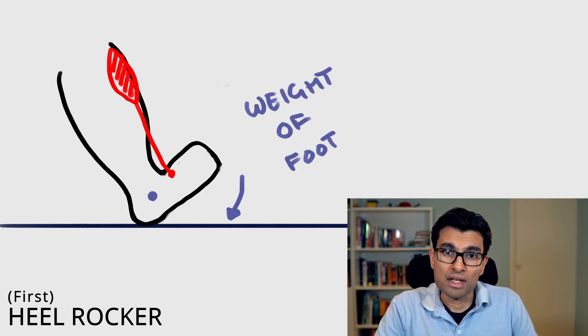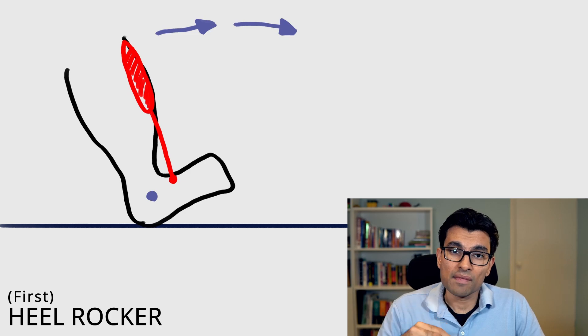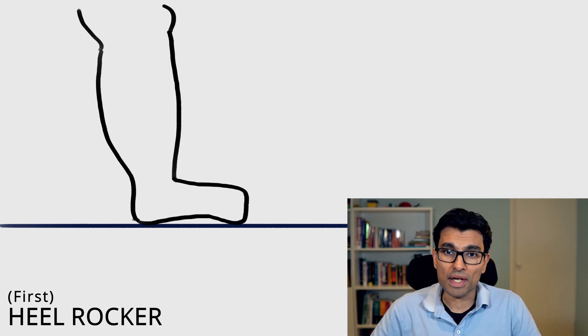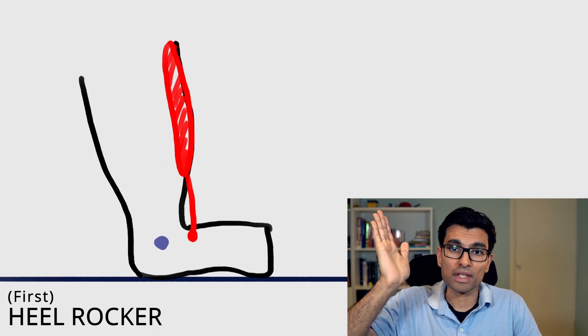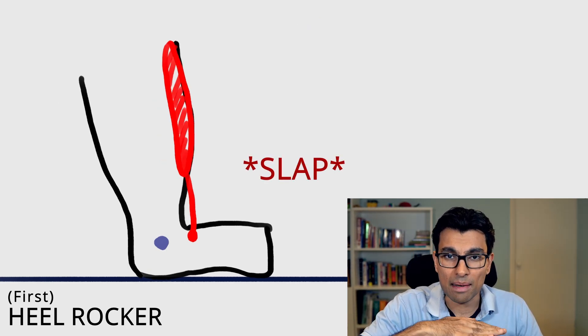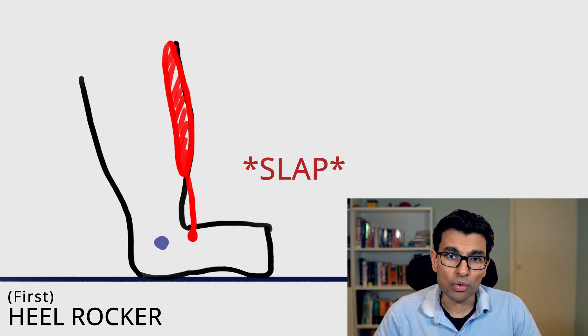In a normal foot this happens smoothly, but if there is weakness of the tibialis anterior, the eccentric contraction can't balance itself out and you get what's called a foot-slapping gait — uncontrolled and rapid plantar flexion once the heel hits the ground, and the foot falls forward with a loud snap. Importantly, to get foot slap the patient needs power of about three out of five — enough to overcome gravity and get the foot in the air, but not enough to control the descent. With power two or less, the patient can't clear the ground, so they either trip or use proximal muscles to lift the foot higher, resulting in a high-stepping gait.